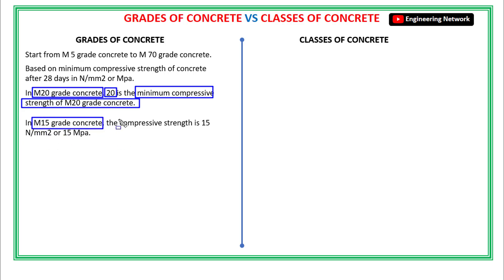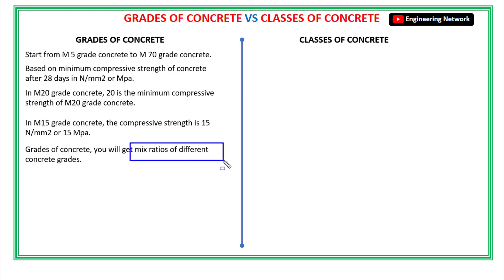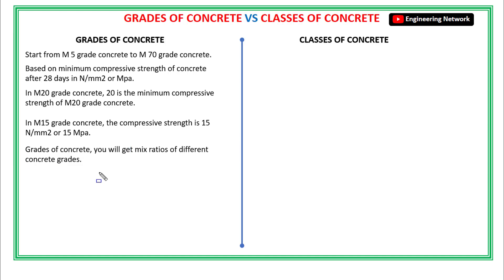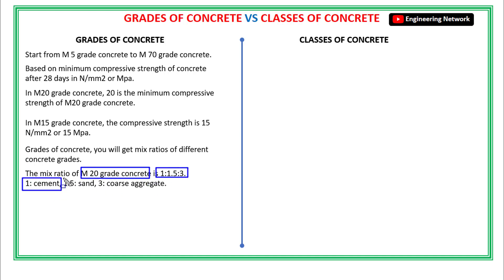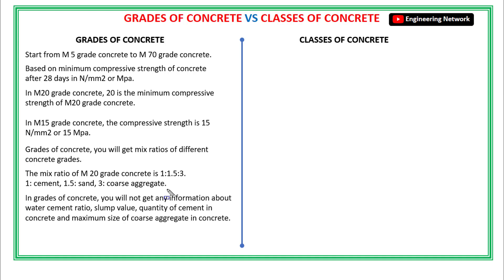Similarly, for M15 grade concrete, the minimum compressive strength is 15 Newton per millimeter square or 15 mega Pascal. Apart from that, the grades of concrete will give you the mix ratios or mix proportions of different concrete grades. Like the mix ratio of M20 grade concrete is 1:1.5:3, in which 1 part is cement, 1.5 parts is sand, and 3 parts are coarse aggregate. So basically, grades of concrete give you the minimum compressive strength and mix ratios of concrete, and are mostly used in laboratory tests where the main concern is to achieve compressive strength.